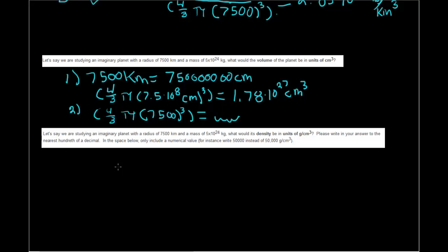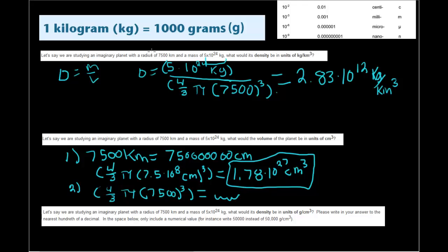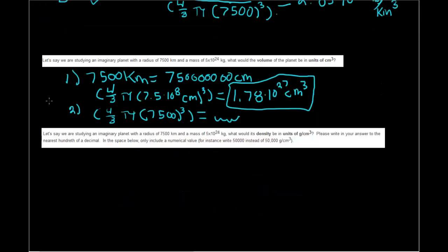Please write your answer to the nearest hundredth of a decimal. Okay, so what we have here is we already have our centimeter cubed volume. So we just need to convert the mass from kilograms to grams. So if we come back here, 1 kilogram equals 1,000 grams. That means we have to add three zeros to the end of the kilogram.